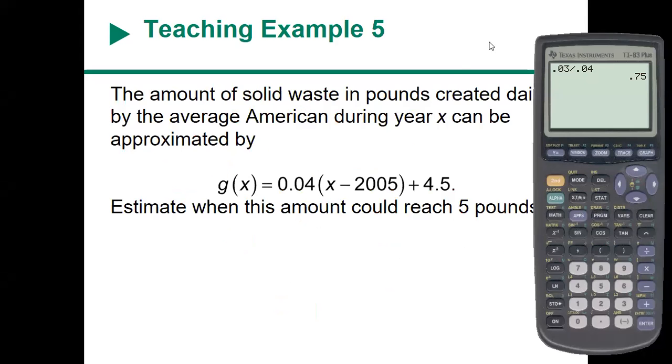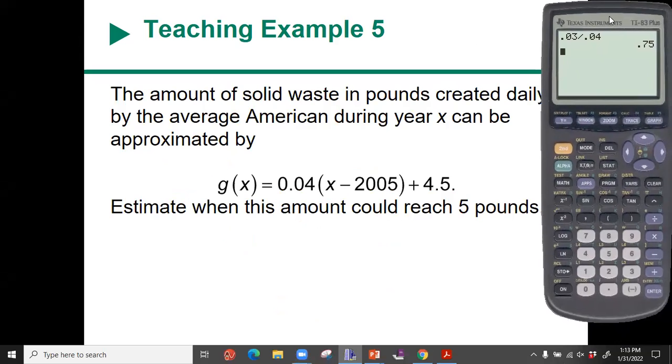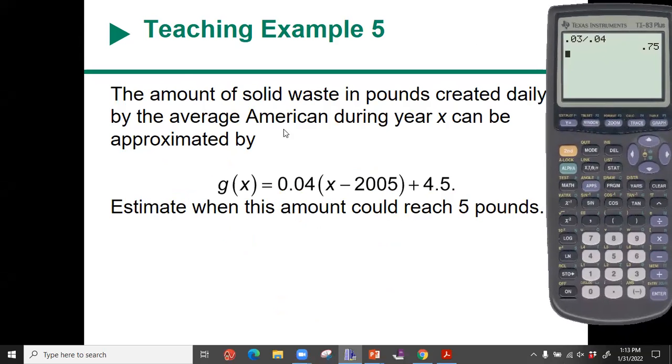All right, so here's a word problem example, a real world example. The amount of solid waste in pounds created daily by the average American during year x can be approximated by g(x) equals 0.04 times (x minus 2005) plus 4.5. Estimate when this amount could reach 5 pounds.